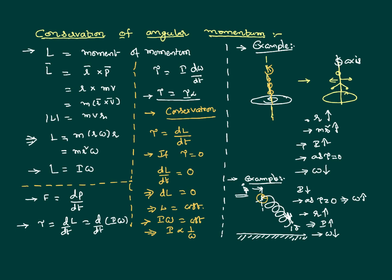To sum up: according to conservation of angular momentum, if there is no external torque acting on the system, the angular momentum of the system is constant. The moment of inertia of the body is inversely proportional to angular velocity. This is one of the conserved quantities in rotational motion, which is always conserved when no external torque is acting, and it shall help us in solving problems as well. Thank you — your comments and feedback are most welcome.